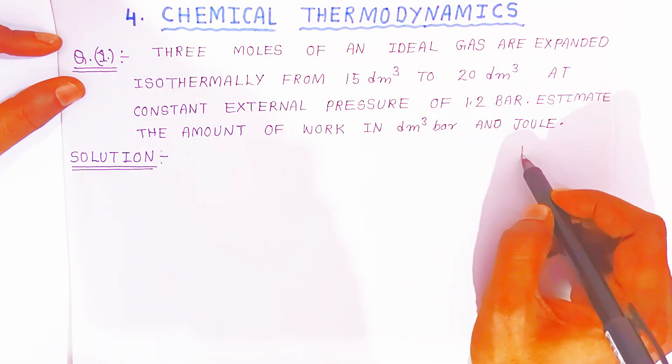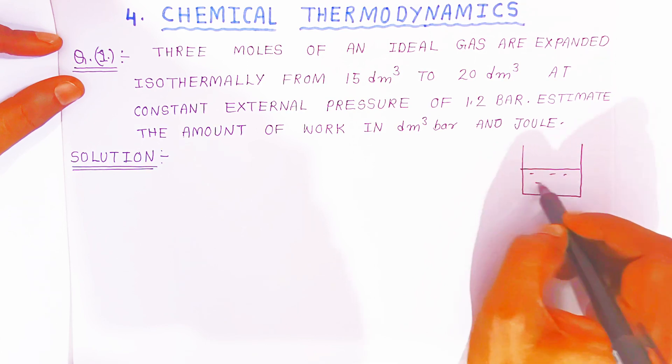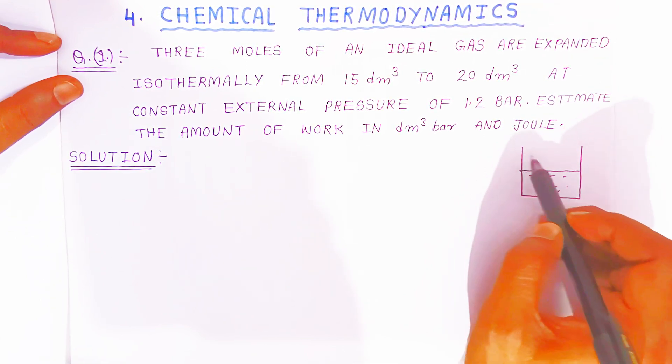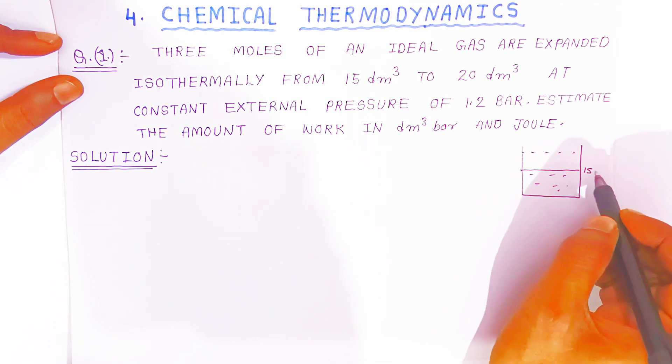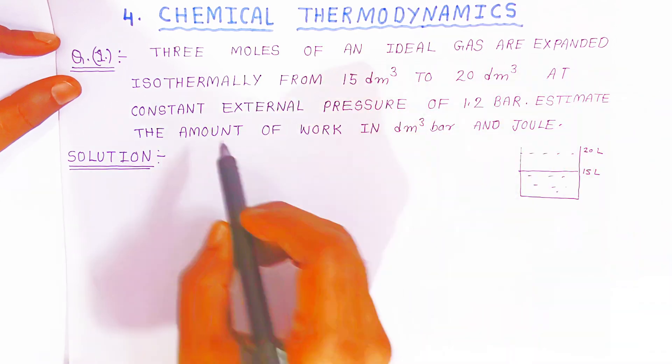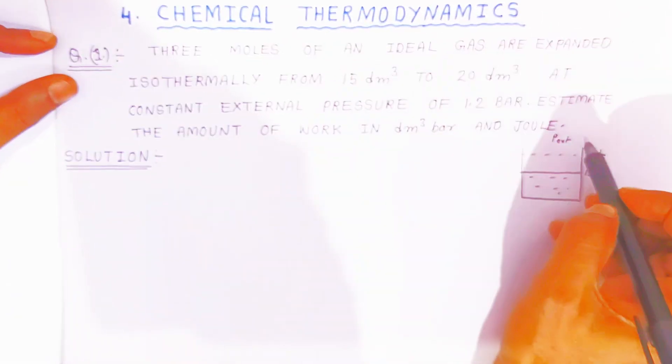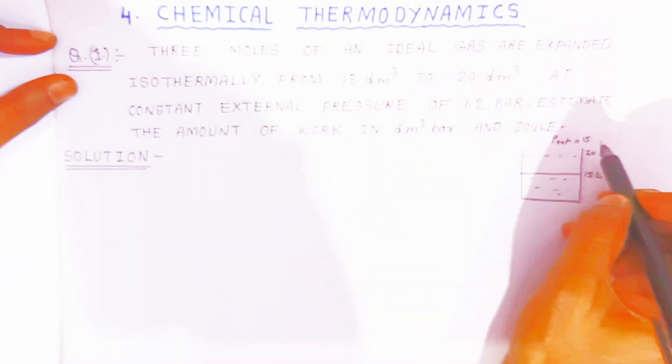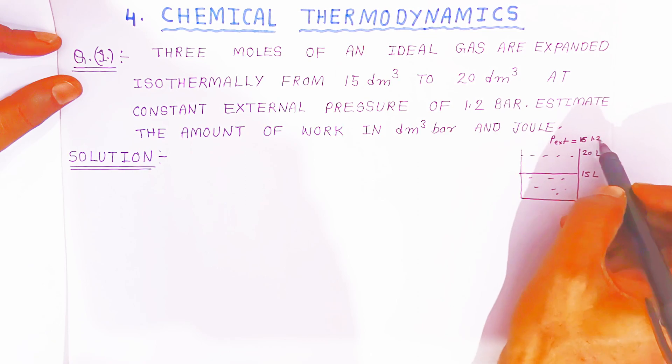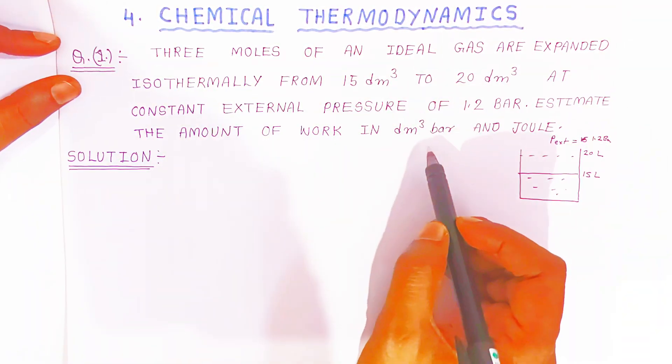So students, here you have the gas in the cylinder. This is the ideal gas and it is expanding from 15 to 20 liter. dm³ means liter. At constant external pressure. Here the pressure external pressure is given to you students, 1.2 bar pressure is given. So external pressure is given. You have to estimate the amount of work done in dm³ and joule.